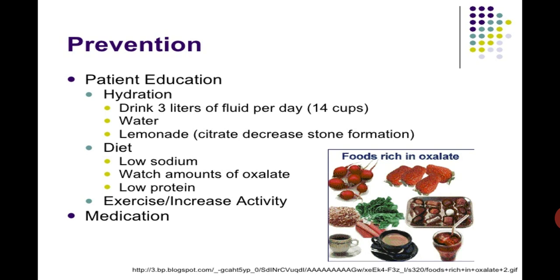Prevention measures include patient education about their condition. Hydration is a very important preventive measure — drinking three liters of fluid per day, about 14 cups. Lemonade, which contains citrate, actually decreases stone formation. The patient's diet should be low sodium, with controlled amounts of oxalate and low protein. Exercise and increased activity are also recommended. Medications are another preventive measure for persons who have a tendency to build kidney stones.